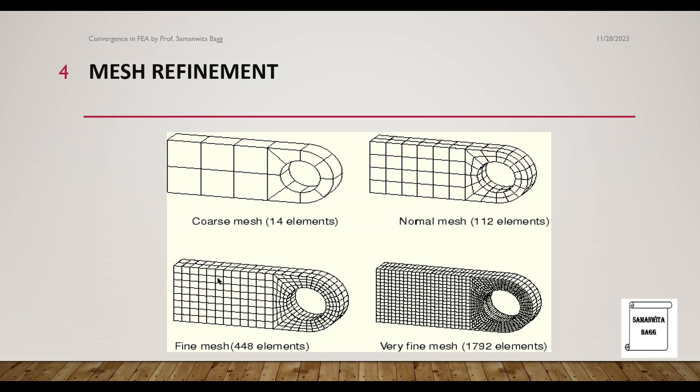Next is fine mesh where there are 448 elements. You can see that the size of mesh has reduced further and the number of elements, the rectangles as you can see, have increased. When you come to the very fine mesh with 1792 elements, the number of elements have increased drastically. So when you increase the number of meshes, you converge towards the solution.